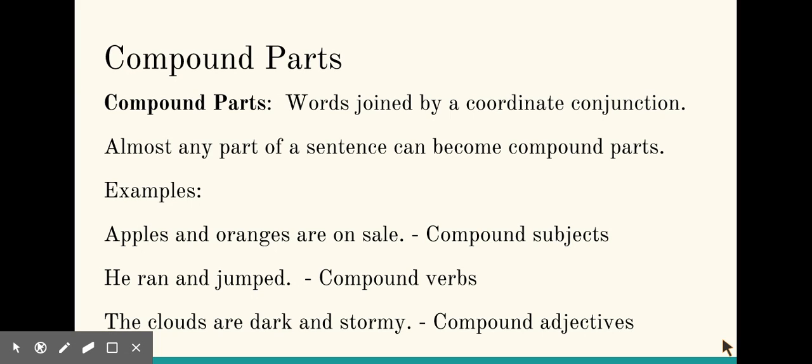Compound parts are words joined by a coordinate conjunction. Almost any part of a sentence can become compound parts. Here are some examples: Apples and oranges are on sale. Apples and oranges are compound subjects because they are joined by the coordinate conjunction and.